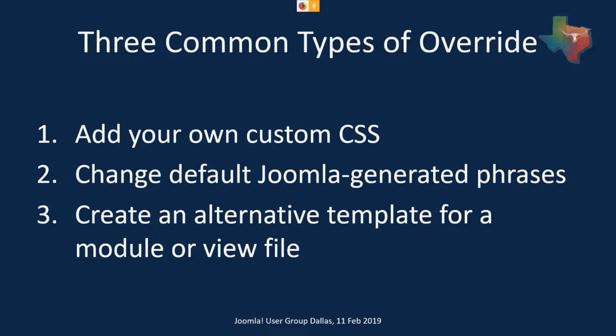There's custom CSS that you can add in that will override the template CSS. There is language override — something that Joomla generates where you want to change the way that phrase is worded. You can also do this sometimes with language files that come with components. And then there is creating an alternate layout. We're going to focus mostly on the first and second types, but we will spend a little bit of time looking at the third.